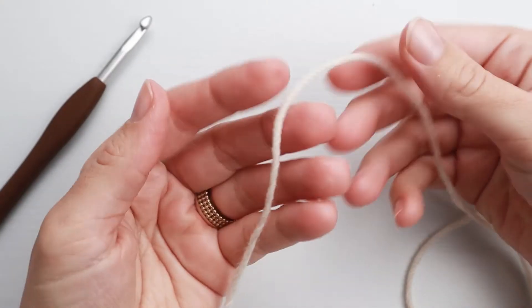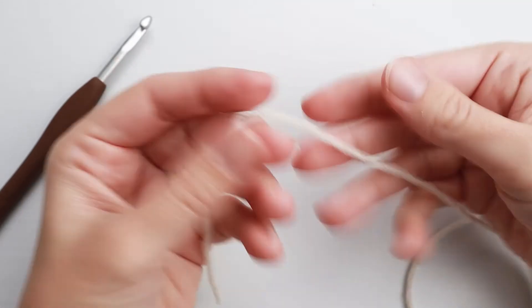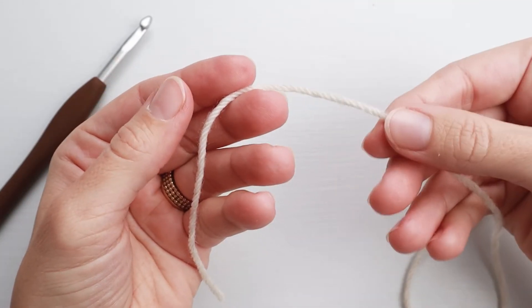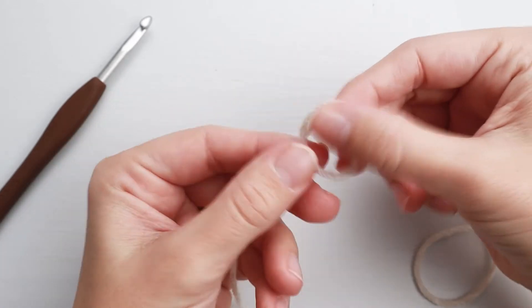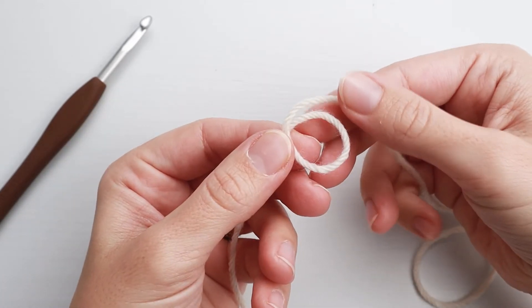Now I'm gonna do my slip knot. I have my starting tail here in my hand. I take my working yarn here and make a loop so that it's above, like this.